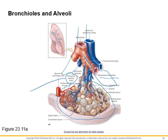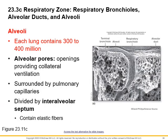Hopefully we remember pulmonary capillary beds. Pulmonary arteries go to pulmonary arterioles, which go to pulmonary capillaries — the site of gas exchange where we drop off CO2 and pick up oxygen. It's amazing that each lung contains upwards of 400 million alveoli — each lung — so 800 million total.